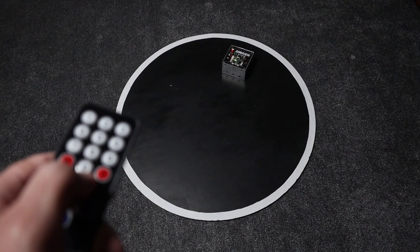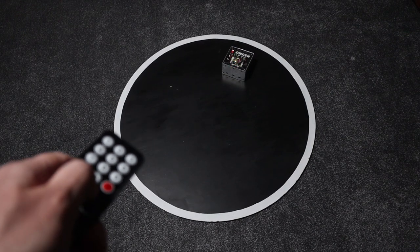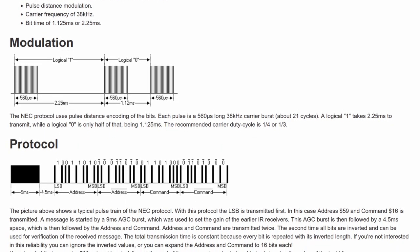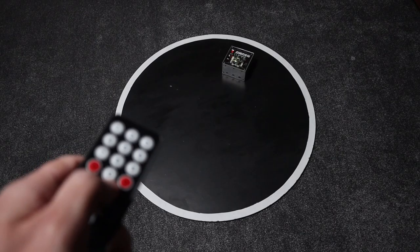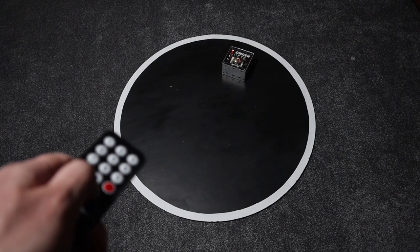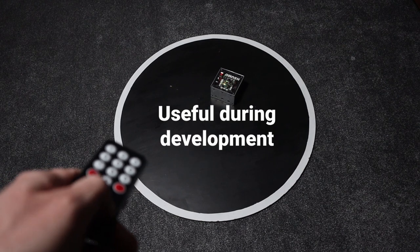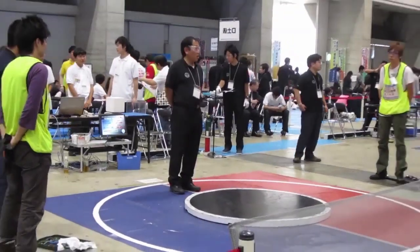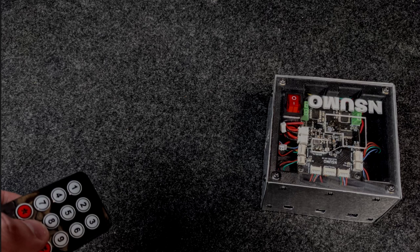In this video, I'm going to decode the signal sent from this iRemote to my SumoBot. This signal follows the NEC protocol, which is one of the most common infrared protocols used for transmitting signals between devices like remote controls and TVs. And while my SumoBot is meant to be fully autonomous, having a way to control it remotely is useful during development, and I must be able to decode a start signal to adhere to competition rules.